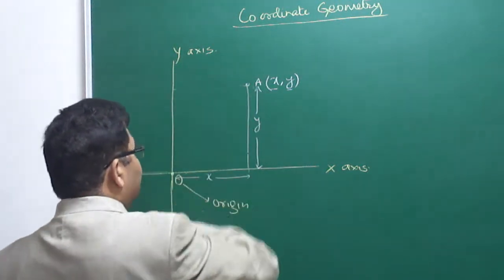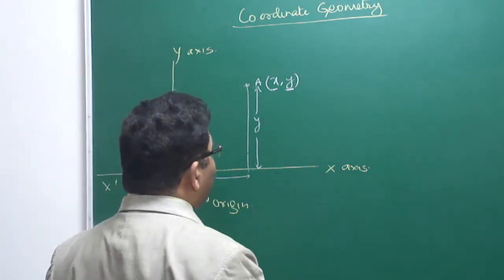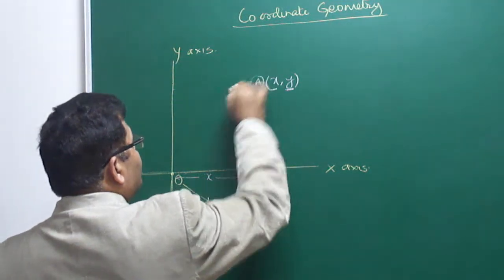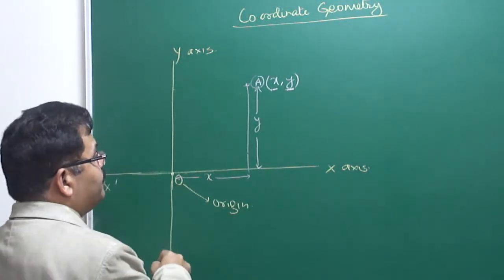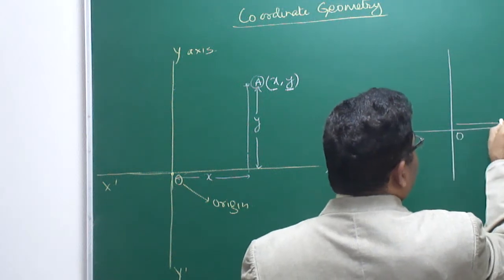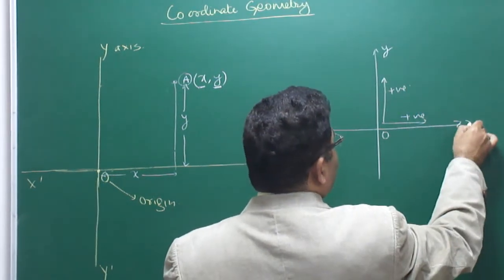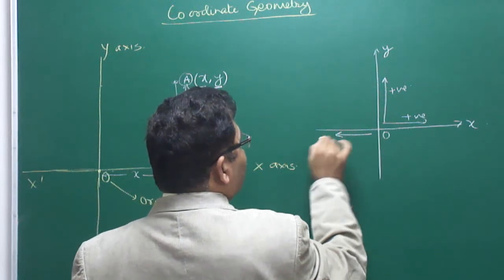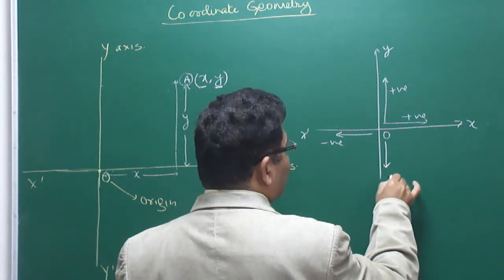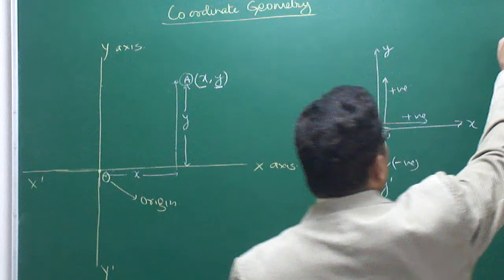In the Cartesian system, X and Y are two values which define the position of a point. Distance along the positive X direction from the origin is positive, and distance along the positive Y direction is also positive. In the opposite directions — towards X-dash and Y-dash — the values are negative. This means the whole system is divided into four parts called quadrants.